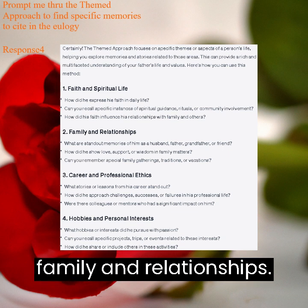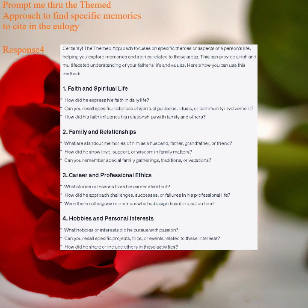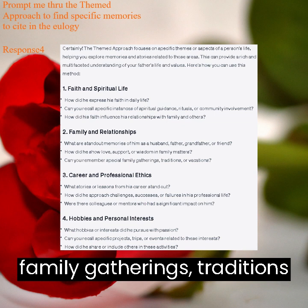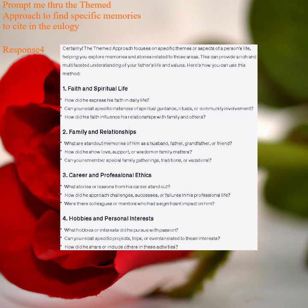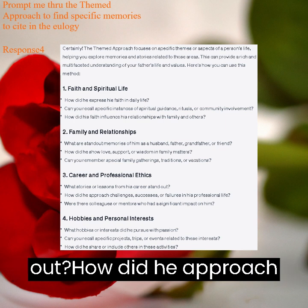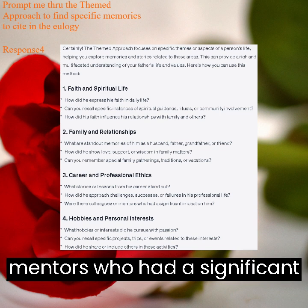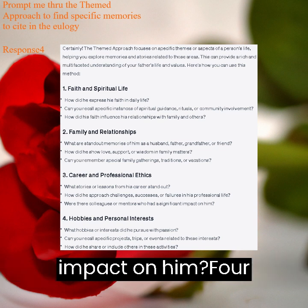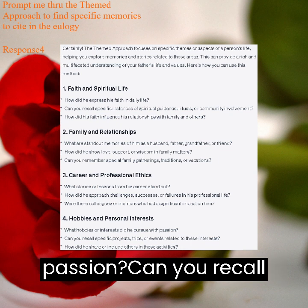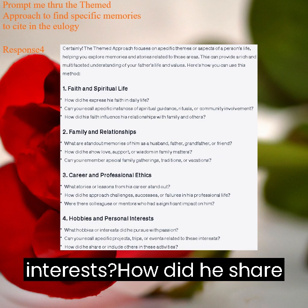2. Family and Relationships: what are standout memories of him as a husband, father, grandfather, or friend? How did he show love, support, or wisdom in family matters? Can you remember special family gatherings, traditions, or vacations? 3. Career and Professional Ethics: what stories or lessons from his career stand out? How did he approach challenges, successes, or failures in his professional life? Were there colleagues or mentors who had a significant impact on him? 4. Hobbies and Personal Interests: what hobbies or interests did he pursue with passion? Can you recall specific projects, trips, or events related to these interests? How did he share or include others in these activities?